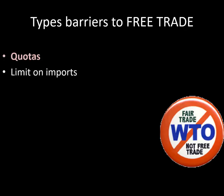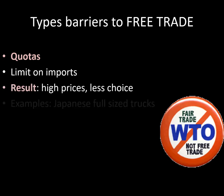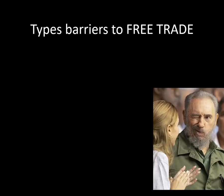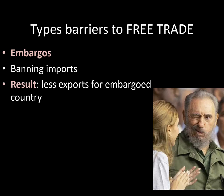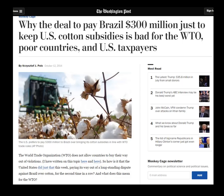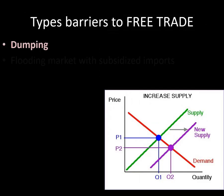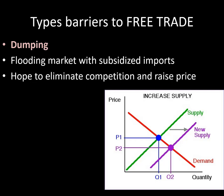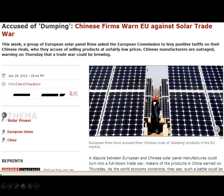Other types of trade barriers include quotas — just a limit on how many products can be brought in, resulting in higher prices and less choice. You could also do an embargo, where you're just not allowed to trade with Cuba or Syria or similar countries. You could subsidize, giving money to a local industry. There's also dumping — flooding the market with products at below-market prices. There's not a lot of evidence that dumping actually happens, though there's evidence of subsidies. For example, the EU warned Chinese firms not to dump solar panels on them.